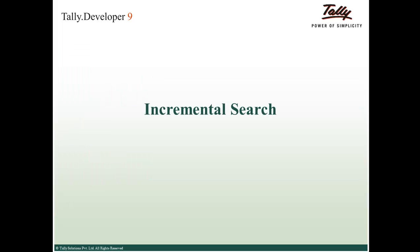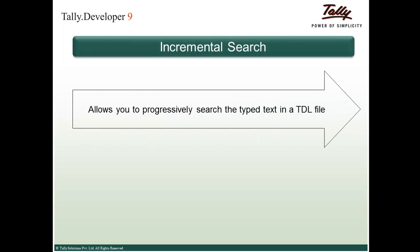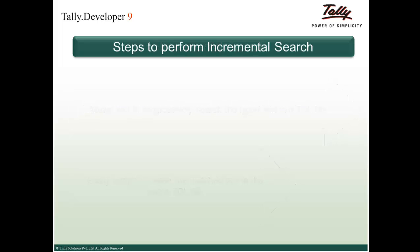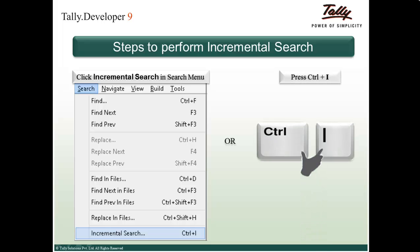The next enhancement is Incremental Search. Incremental Search allows you to progressively search typed text in a TDL file, and you can easily toggle between matched text in the same TDL file. To perform incremental search, go to Search and select the Incremental Search option, or press the shortcut Ctrl+I in Tally Developer 9.